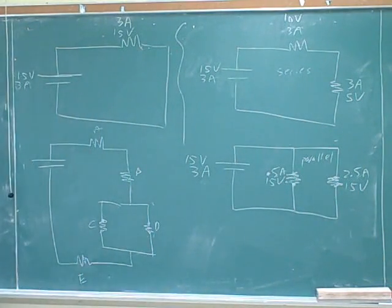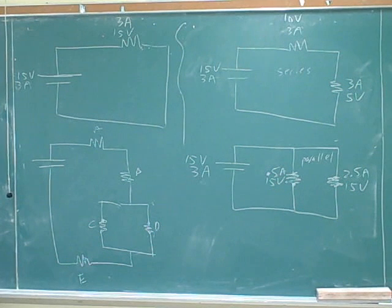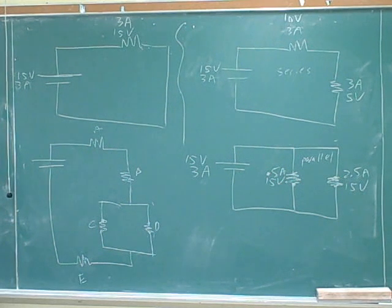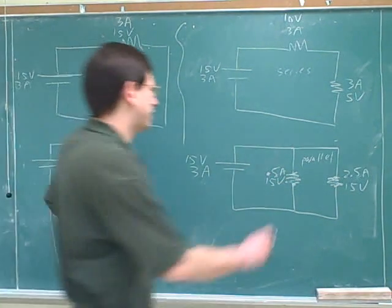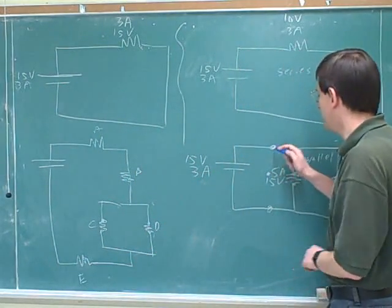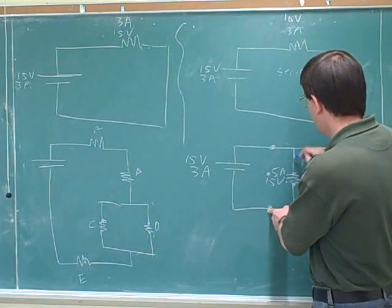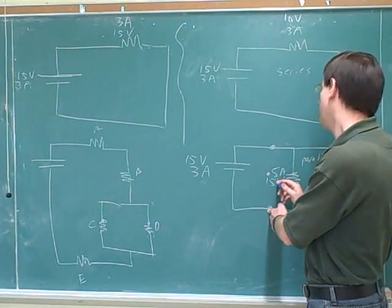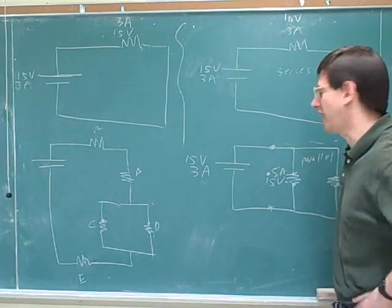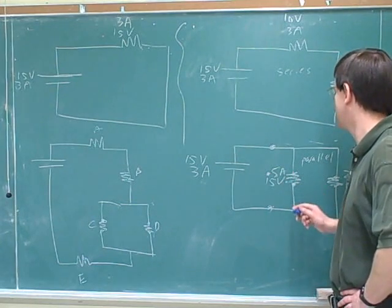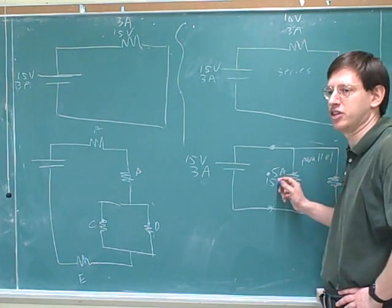Points in series have to have the same current, and points in parallel have to have the same voltage change. We can see why that is. If you go from here to here down this path, you're losing 15 volts of height. You've got to lose the same amount of height when you take any path between these two points, because they have the same starting and ending points. We shouldn't have to memorize that things in parallel have the same voltage change — that should be obvious if we think of voltage change as the change in your height.